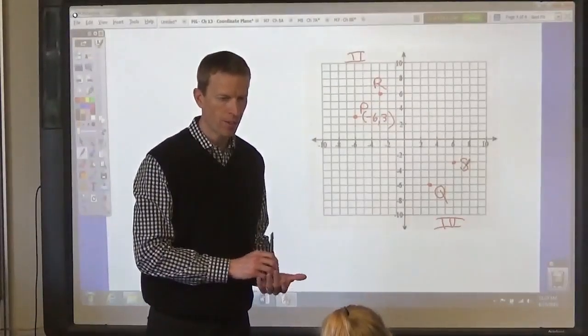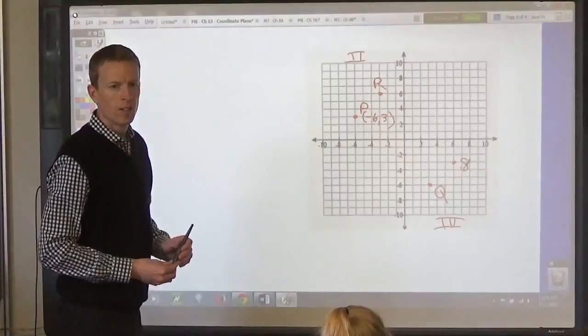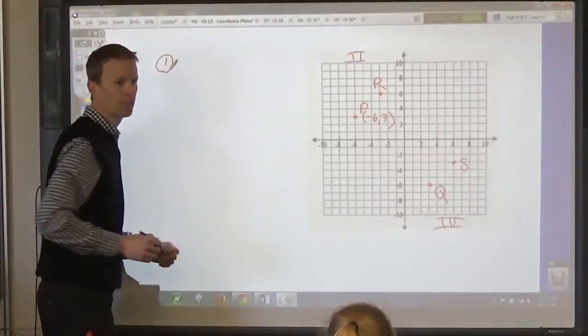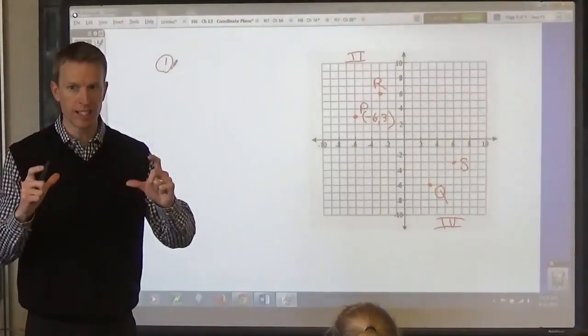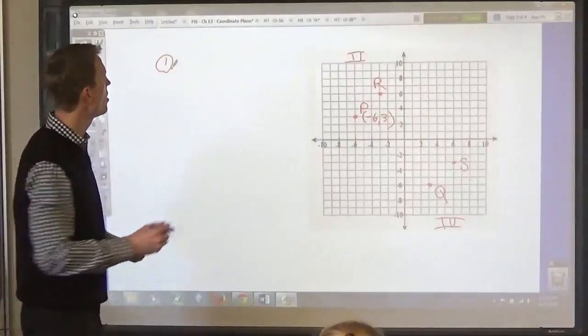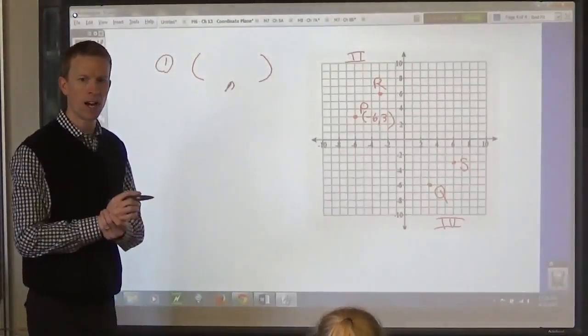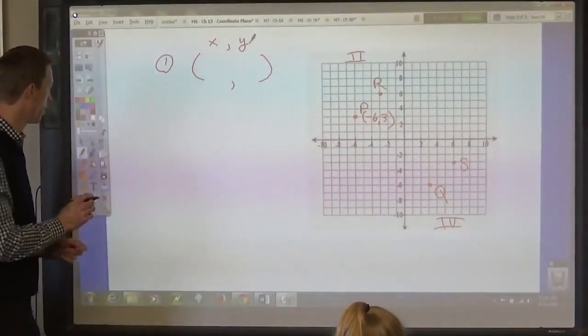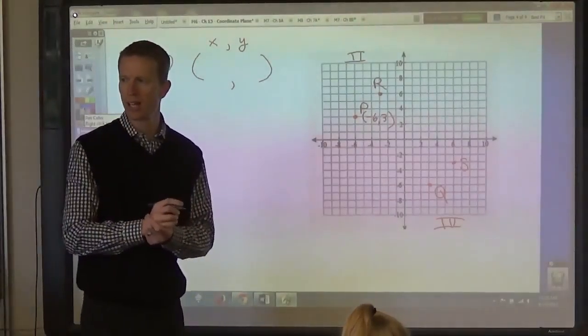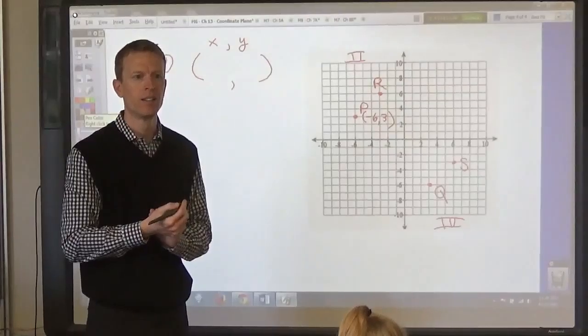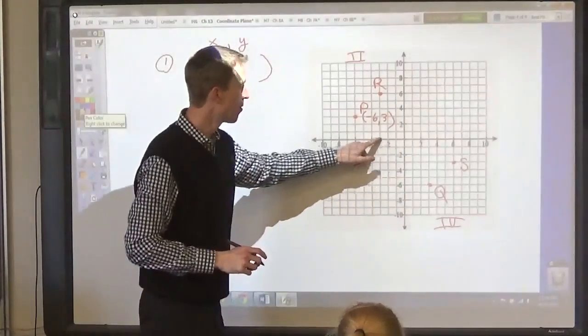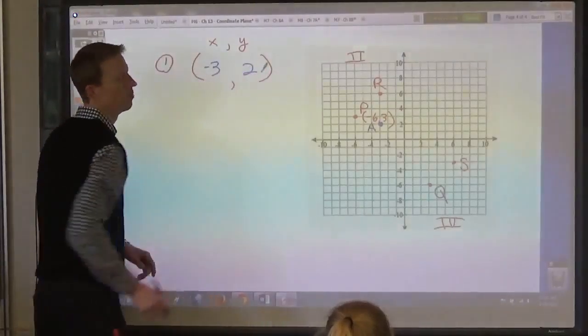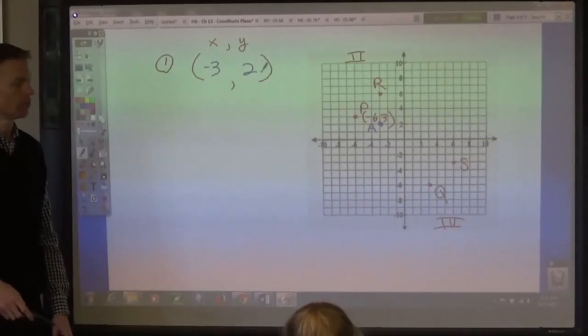What do we have to do in this page? What are the directions? Lily? Write the ordered pair for each point. Right. We have to write the ordered pair in parentheses and separate the numbers with a comma. Which number do we have to write first? The X or the Y? The X always goes first. X, comma, Y. So where is number 1 located? What letter is that? A. Where is A located? AJ? Negative 3, 2. So up here. So we write negative 3, 2. What quadrant is that? 2. Any questions?